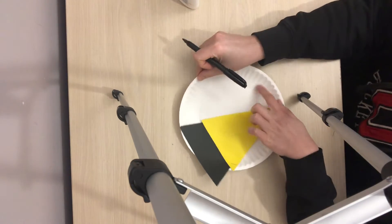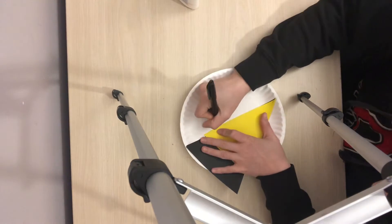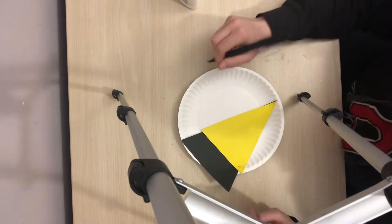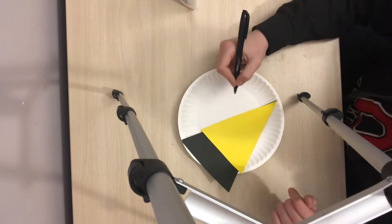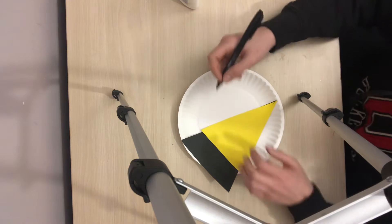Next, on the part of the plate that's blank, you're going to write, 'You stole a pizza my heart.' And you can write it however you want. You can do cursive, you can have them hand over hand, whatever.